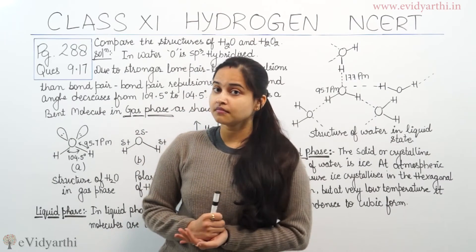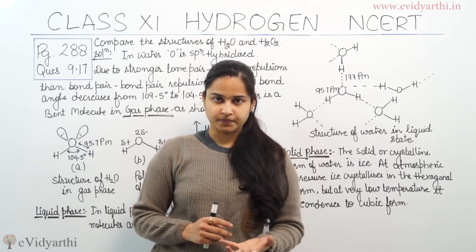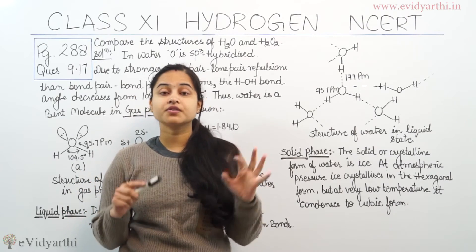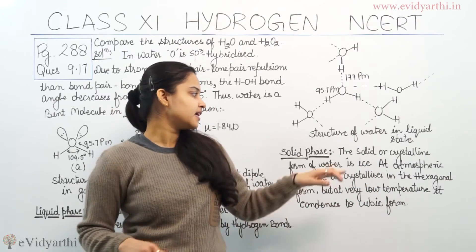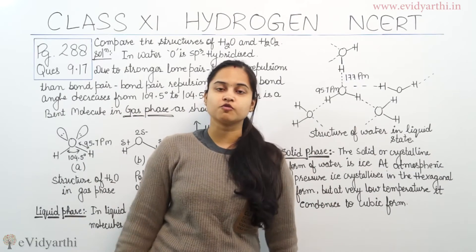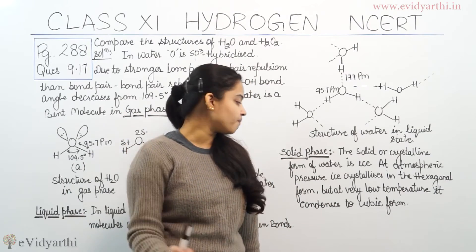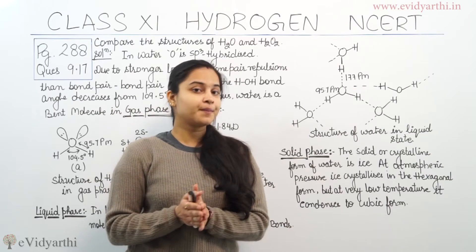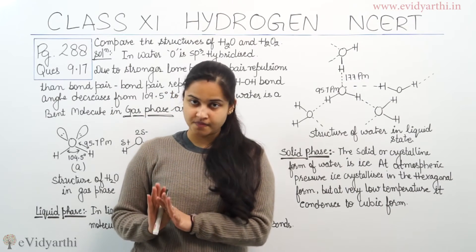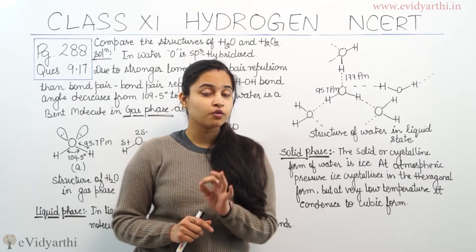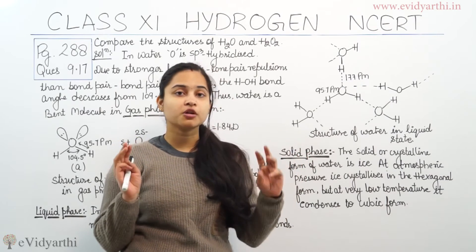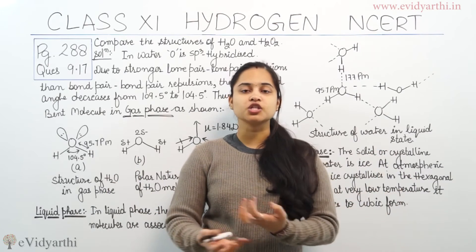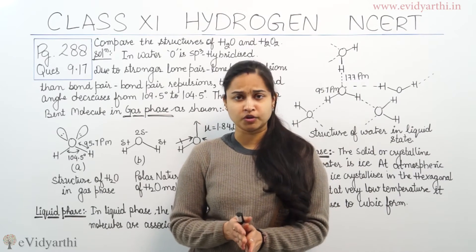Now let's go to the solid state — the solid or crystalline form of water. At atmospheric pressure, ice crystallizes in the hexagonal form. But at a very low temperature, it condenses to a cubic form. So this covers the gaseous, liquid, and solid phases — how the H2O molecule exists in all three phases.